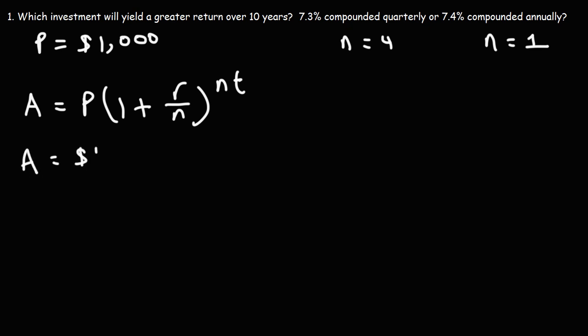So the principal that we're starting with is $1,000. R is the interest rate as a decimal. So 7.3%, if we convert that to a decimal, if we divide it by 100, that's going to be 0.073. N is 4 for the first situation, and we're analyzing the investment over a time period of 10 years.